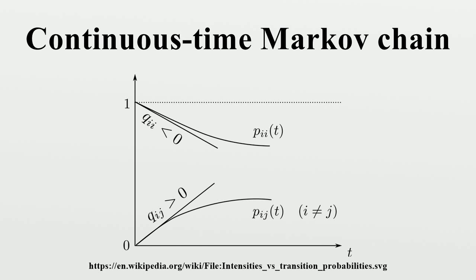Another discrete-time process derivable from a continuous time Markov chain is the delta skeleton — the Markov chain formed by observing the process at fixed intervals of δ units of time. The random variables X, X(δ), X(2δ), ... give the sequence of states visited by the delta skeleton.